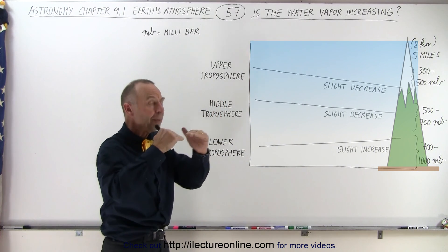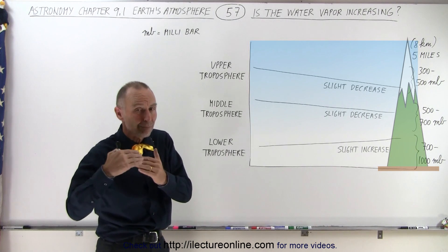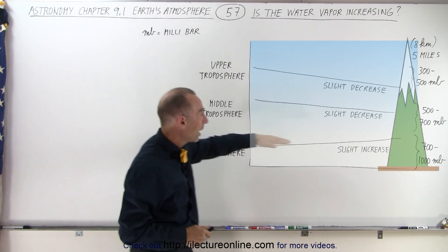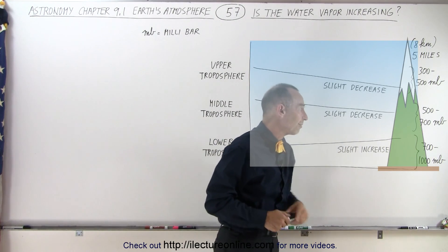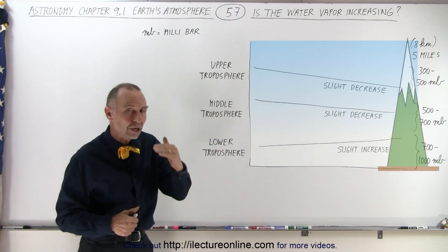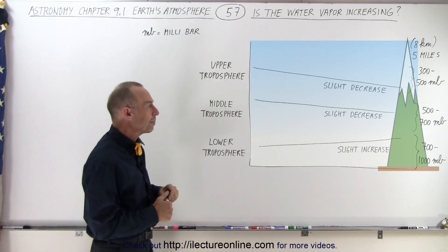But then as we go higher up into the atmosphere, in the middle of the troposphere, now when we are at a pressure of about 500 to 700 millibars, we see actually a decrease in the water vapor.